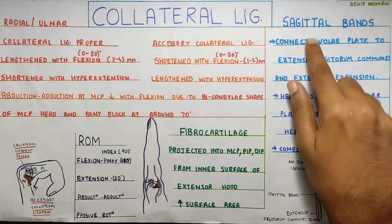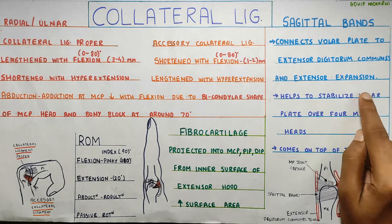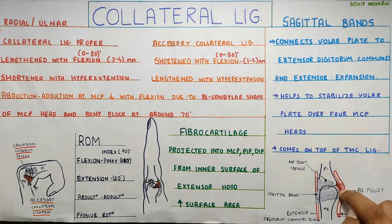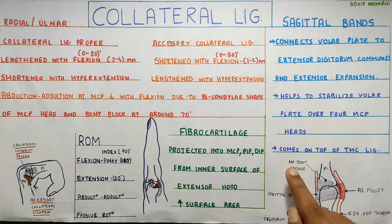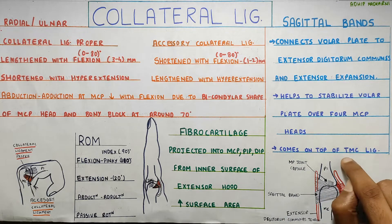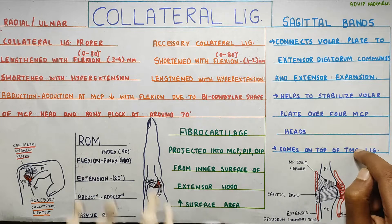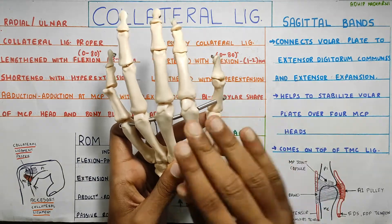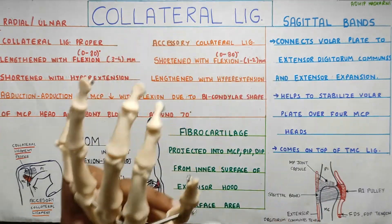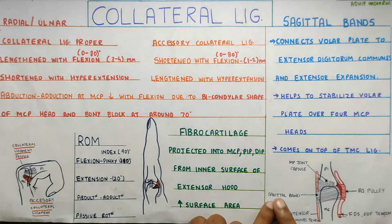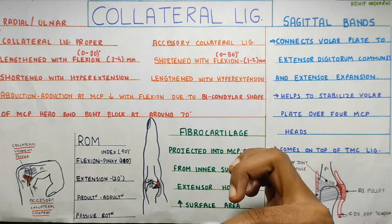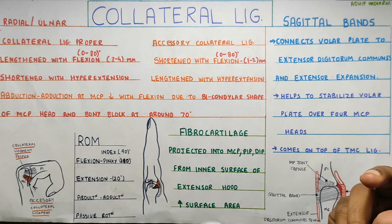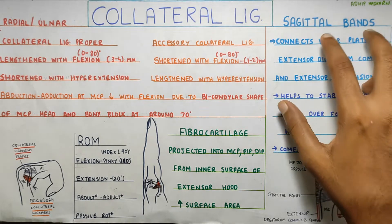The sagittal band basically helps to stabilize the volar plate, and it does this at all four MCP joints. It also comes on top of the transverse metacarpal ligament. So it kind of binds everything together — all the ligaments, the capsule, everything. It's like a band which holds everything together and provides stability. Stability is the main function of the sagittal band.